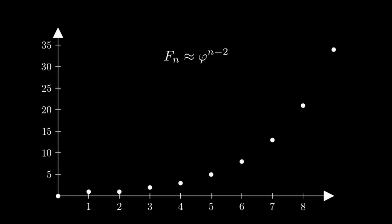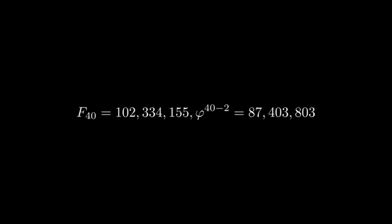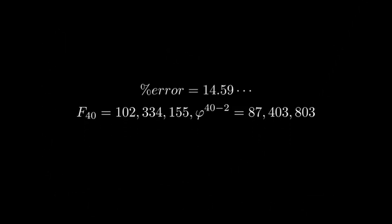If we plot these on the graph, we can see it does in fact work as an approximation, but they do stray away from one another quickly, and by the 40th Fibonacci number, there's a 15% error. This is not great.